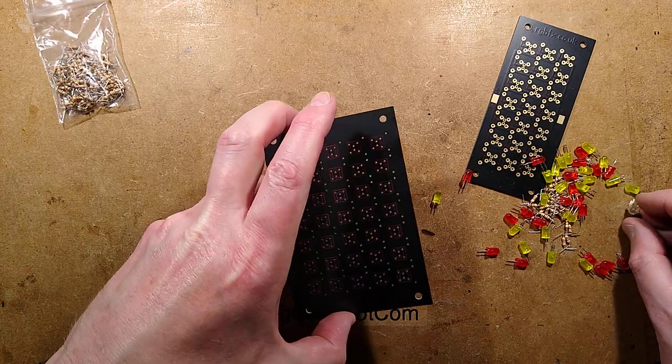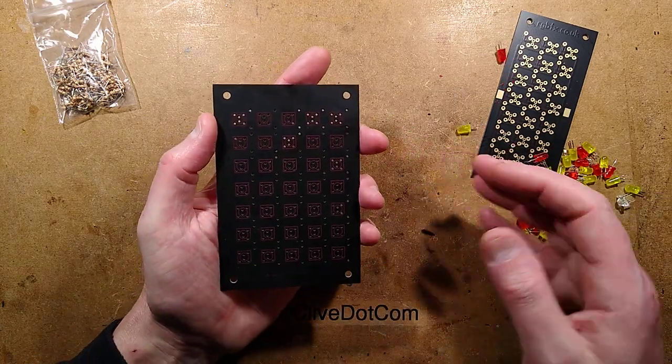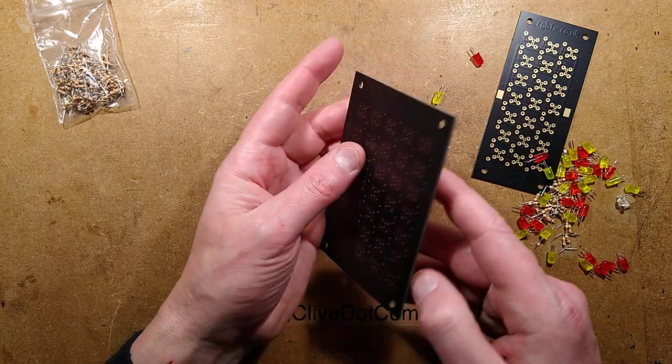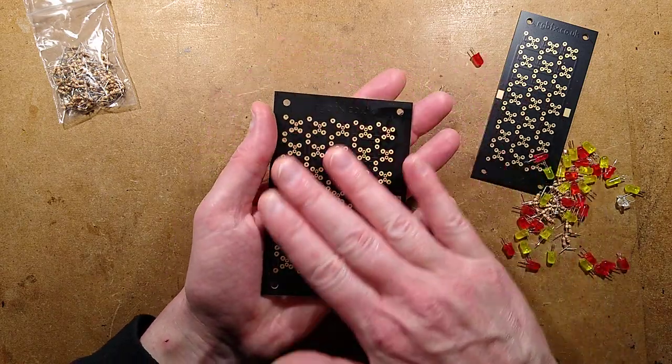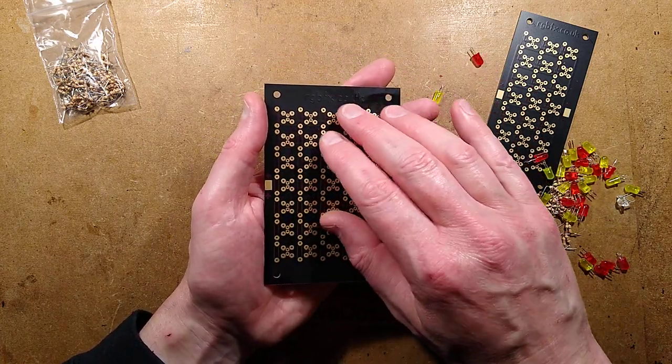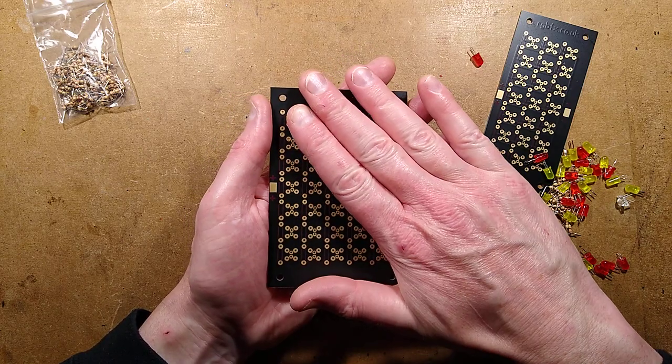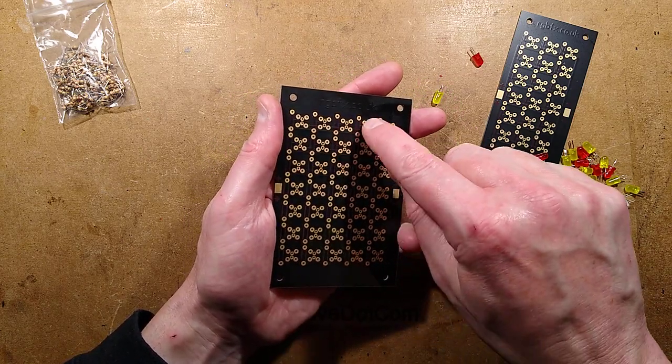I'm going to populate this. I'm going to put the resistors on the back. It was designed to keep the front clear, so the resistors go in the back. You'd normally just populate it where the LEDs are going, but in this instance I'm going to put a resistor in every single position.